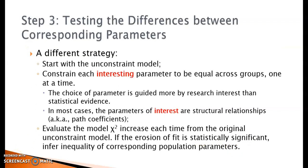A different strategy can be used in step 3, in which you start with the unconstrained model and constrain each parameter of interest to be equal across groups one at a time. Your choice of parameters to be constrained is guided more by research interest than statistical information. But whether to include a constraint in the final model still depends on the model chi-square increase each time from the original unconstrained model. If the chi-square increase is statistically significant, you can infer the corresponding population parameters to be significantly different.